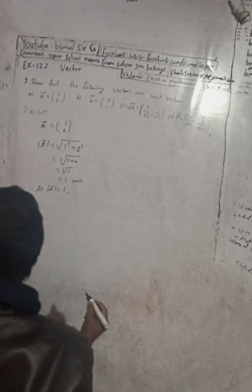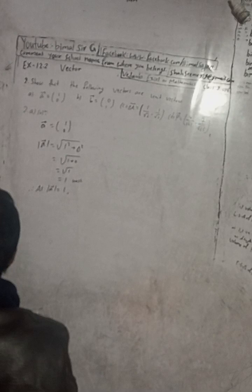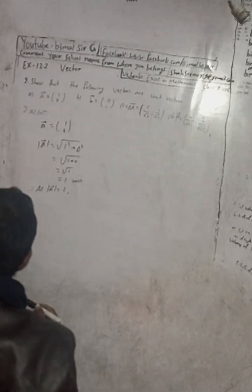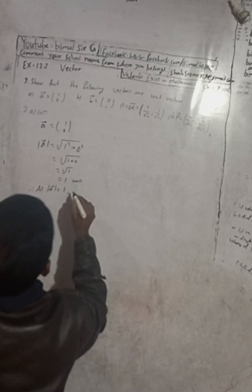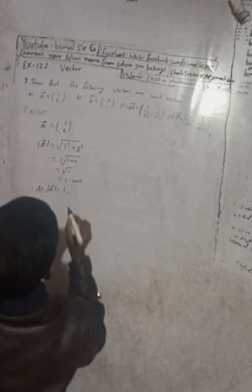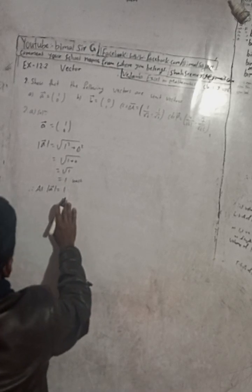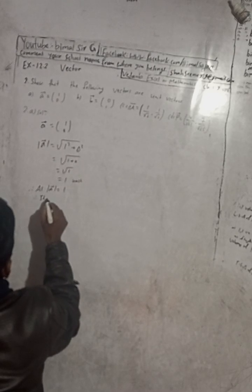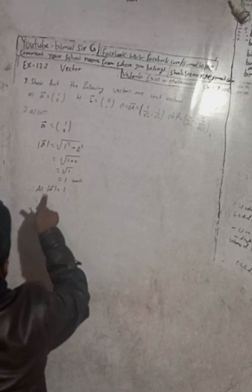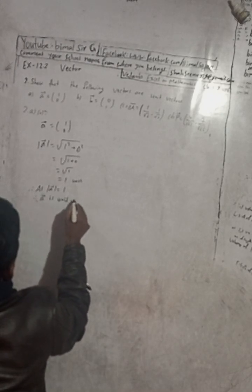Therefore, as the modulus of vector A is equal to 1, it is a unit vector. You can write it here: since modulus of A equals 1, therefore vector A is a unit vector.